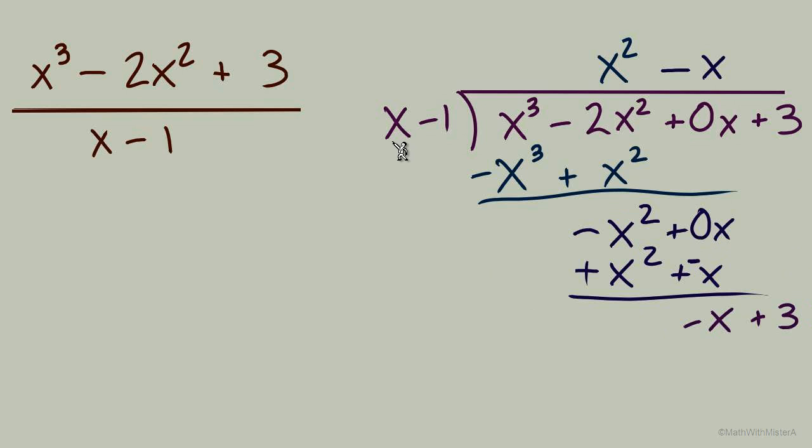We always want to see those terms cancel. Bring down the last term plus 3. And our last round, x times what equals negative x. That's just negative 1. Multiply back down, do the flip signs and add. And down here, we have our remainder of 2. So we perform this division using long division.